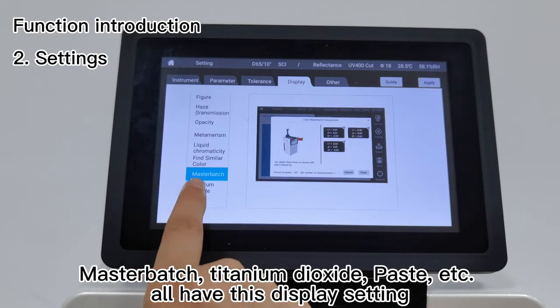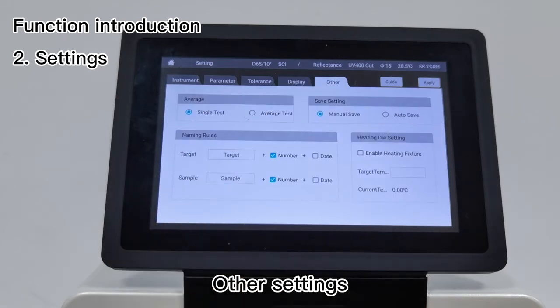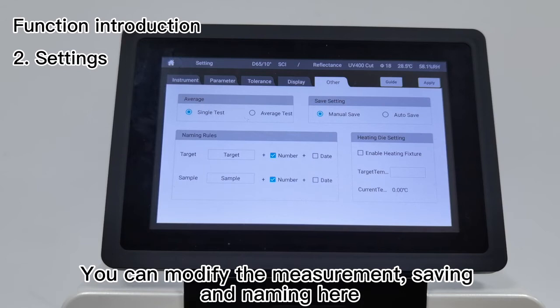Additional features include titanium dioxide, taste, and more. All have this display setting. In other settings, you can modify the measurement, saving, and naming here. The heating module is also set here.